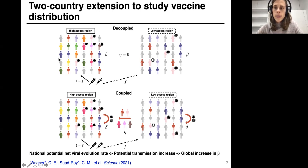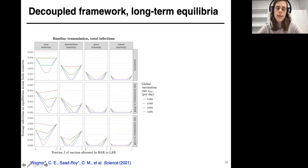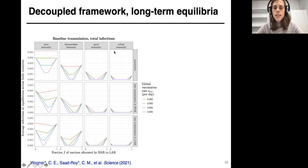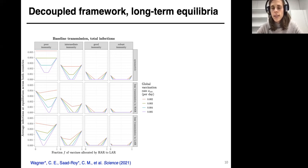For simpler results from the decoupled framework, we can do a lot of this analytically by looking at where long-term equilibria lie and plotting average infection burden at equilibrium across both regions. Moving from left to right columns increases the strength of immunity — reflecting duration of immunity and susceptibility to secondary infection. Colors represent vaccination rate, from red for the lowest to purple for the highest. Very clearly, increasing the global vaccination rate can really cut down on infections at equilibrium.